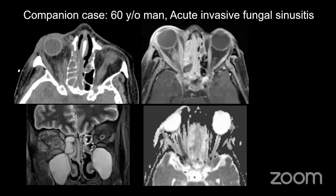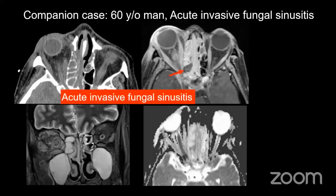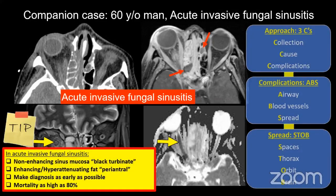Another companion case of acute invasive fungal sinusitis: again you can see lack of enhancement — one example showing abnormal tissue outside the sinus, the other inside the sinus — with optic nerve stretching and ischemia in these patients. Key summary: in acute invasive fungal sinusitis, identify the non-enhancing sinus mucosa or the black turbinate sign due to the angio-invasive nature; look outside the sinus for enhancing or hyperattenuating fat, typically in the periantral region; and make the diagnosis as early as possible because mortality is very high.